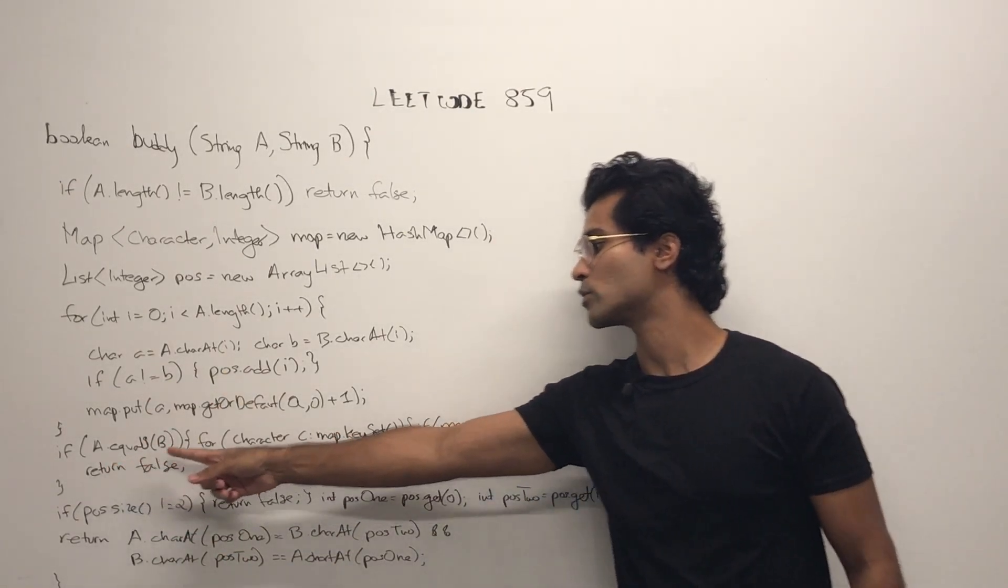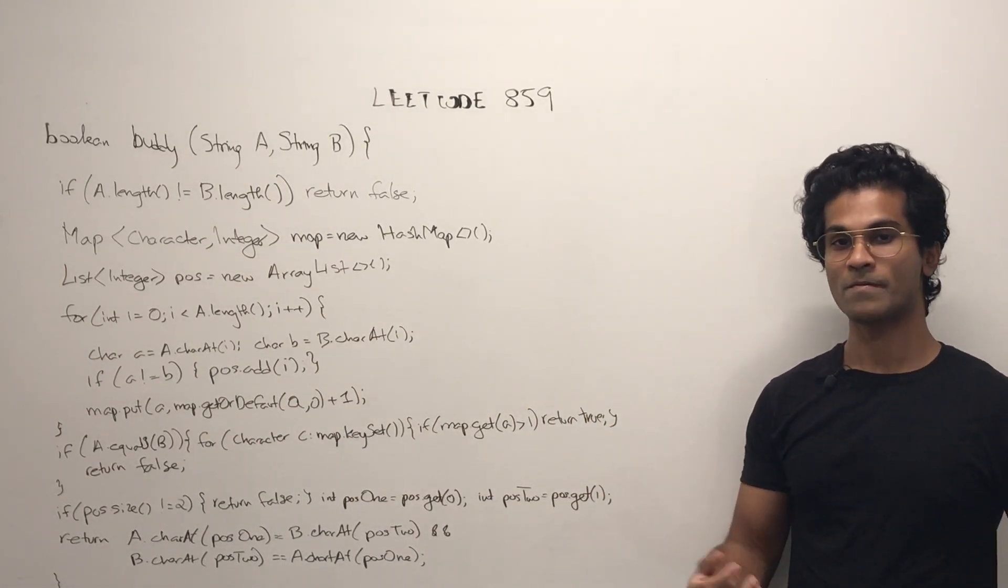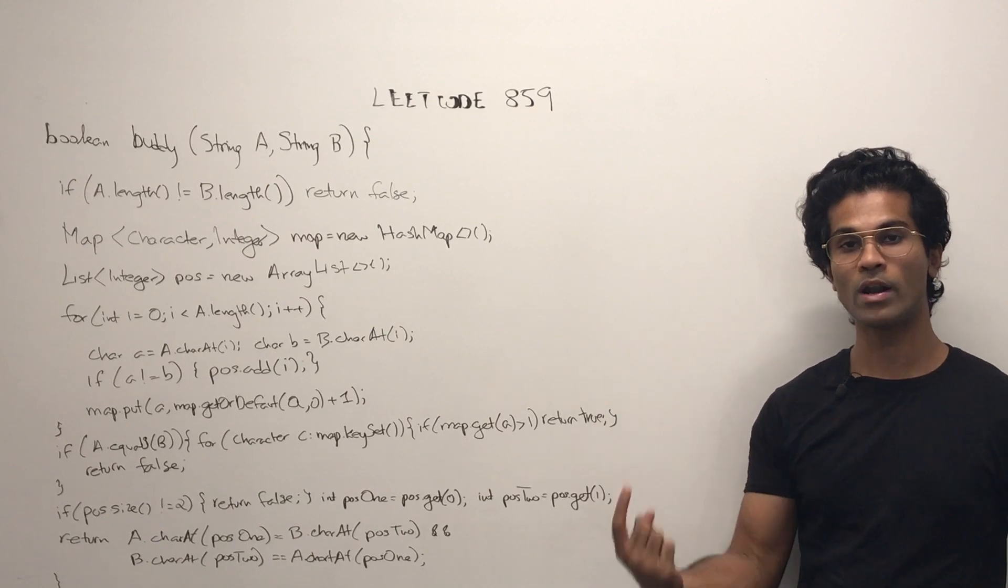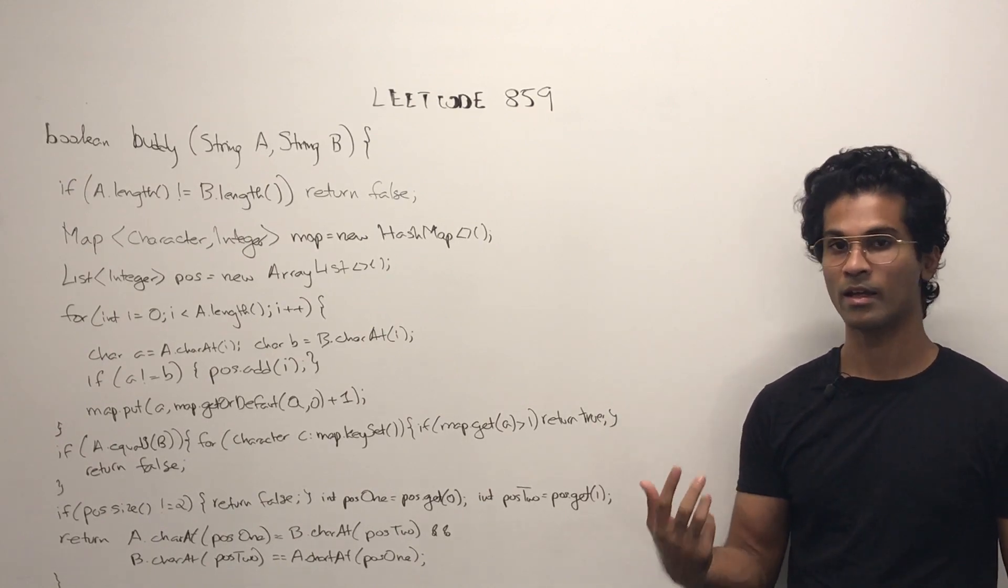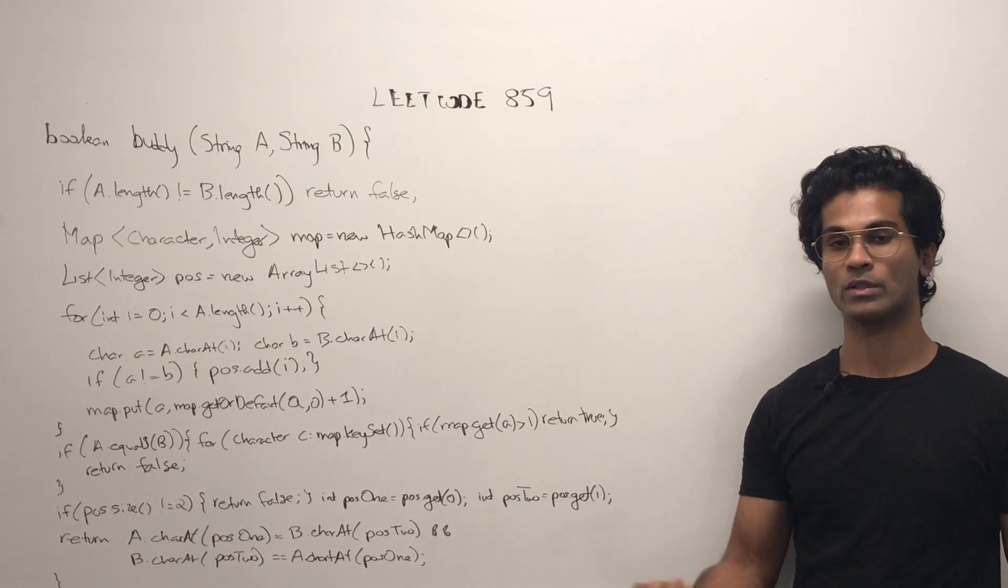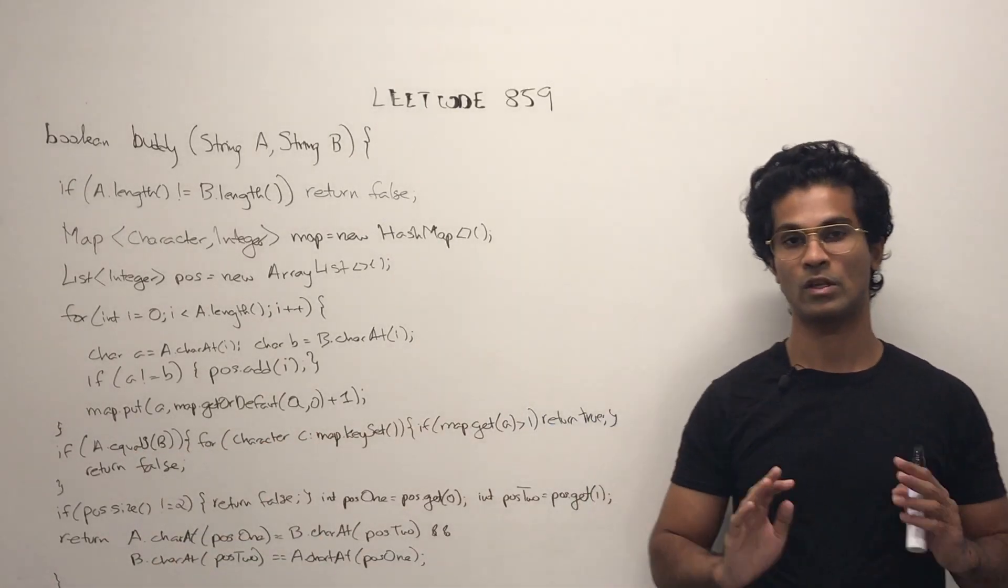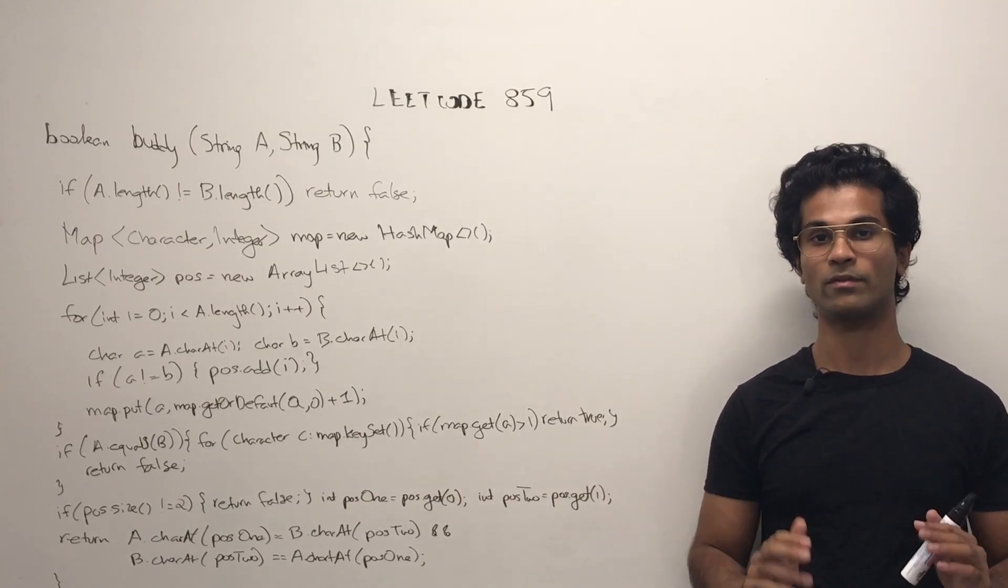Then we check if both the strings are equal and if they are we go through our counter and see if there's at least one letter which is repeating. If the count is greater than one we return true. Otherwise we return false because we've established that they're both equal and there's no repeating characters to swap safely once.